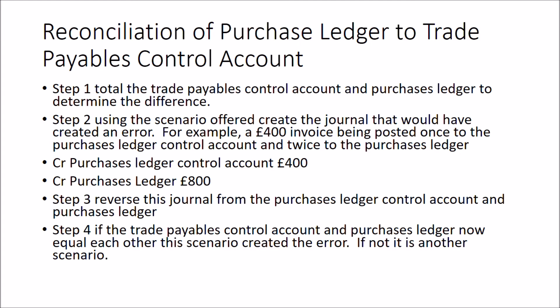This type of discrepancy often forms an exam question. What you'll often get is a difference between the purchase ledger and the trade payables control account totals, along with a series of scenarios asking which one is responsible for the difference. The approach is a four-stage process: total up the trade payables control account and the purchase ledger, then determine the difference.